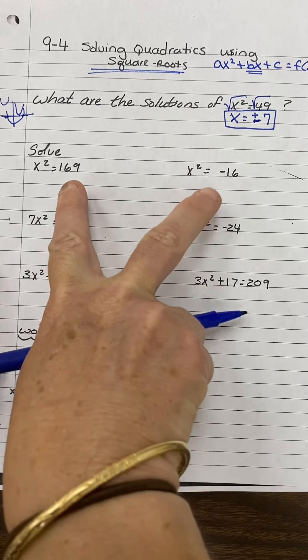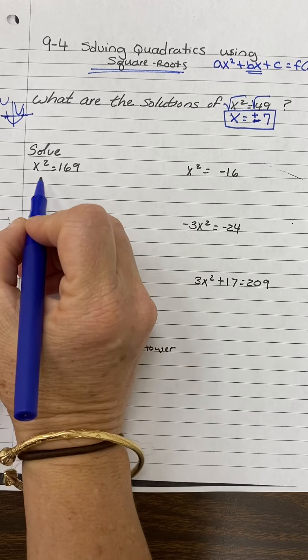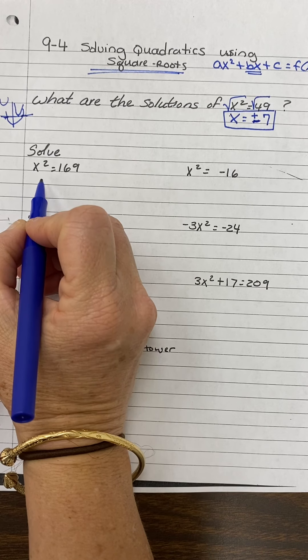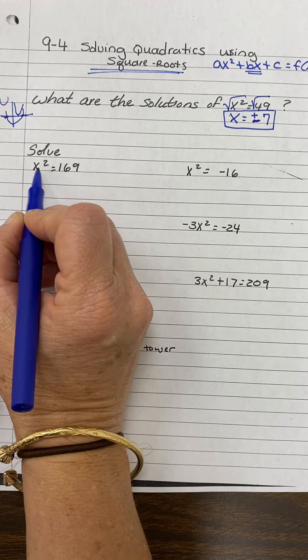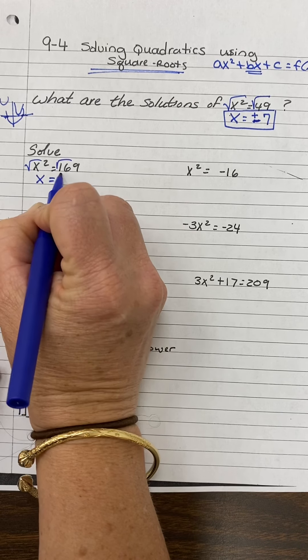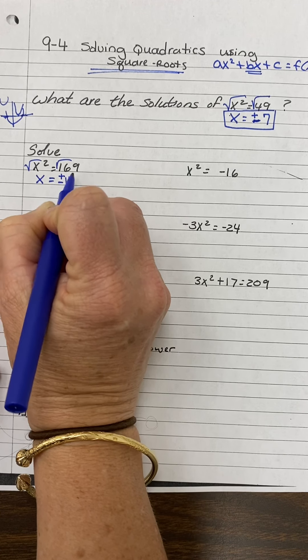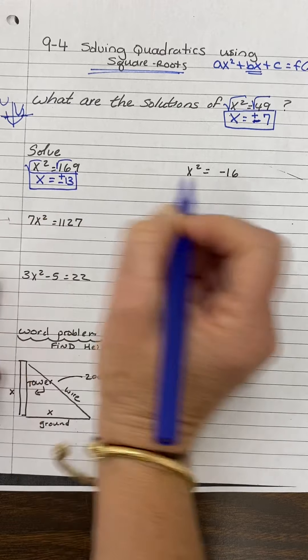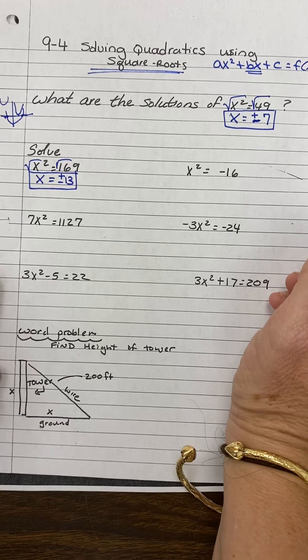So you guys should be able to do these two problems right here. To solve for X, I have no B, I have no X term, so I'm just going to go ahead and square root both sides. So X equals the square root of 169, which is positive and negative 13. So two solutions again.